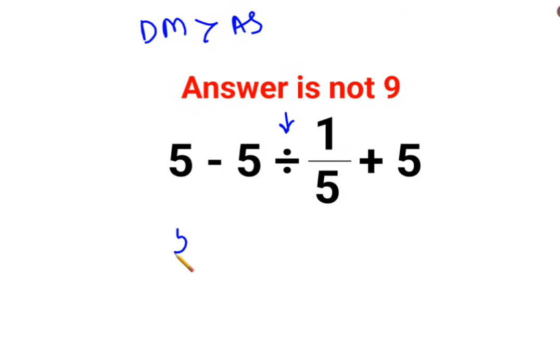So here in this case what you need to do is first this division. We'll keep that five as it is, minus five divided by one upon five. Whenever there is a fraction involved, we'll follow the acronym of KCF.